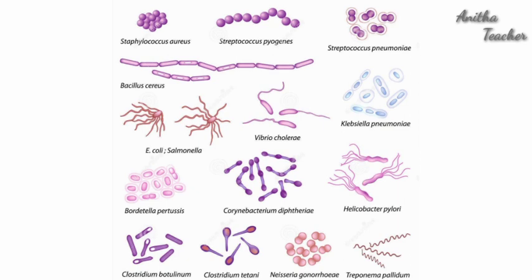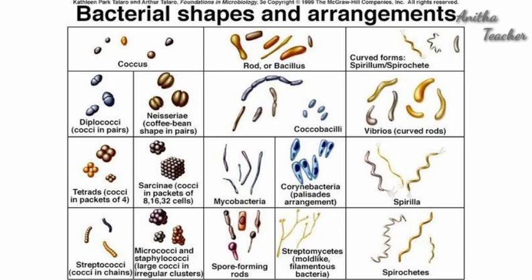Some bacteria are deadly parasites of plants, animals, and human beings. Some bacteria are in mutually beneficial symbiotic association with plants and animals. Regarding the morphology of bacteria, let's discuss size. Bacteria are very small organisms which are barely visible under the light microscope. Their size varies according to species. Majority of bacteria are in the range of 2 to 5 micrometers in length and 0.5 to 1 micrometer in breadth.